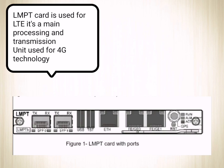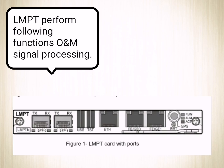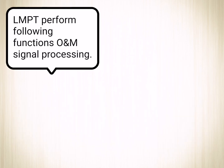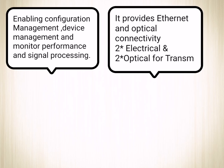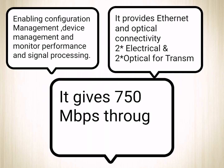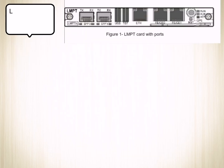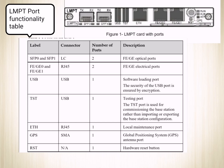This one is the LMPT card. It can provide O&M signal processing functions and it supports both Ethernet and optical connectivity, meaning you can connect both Ethernet cables and fiber optics through it. It gives a 750 megabit per second data transmission rate.